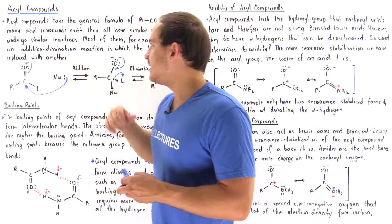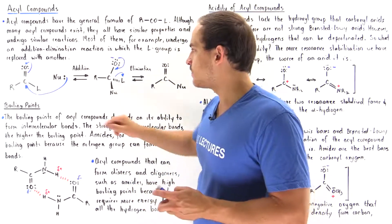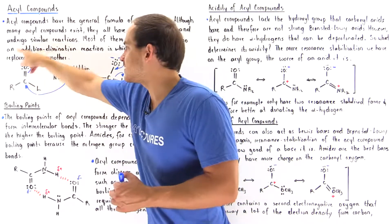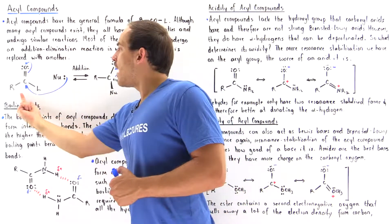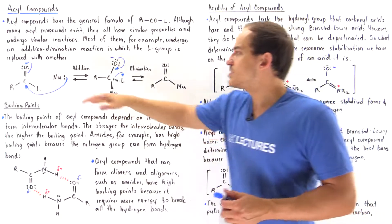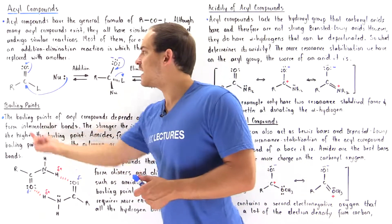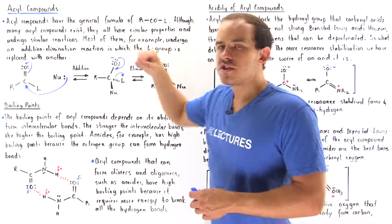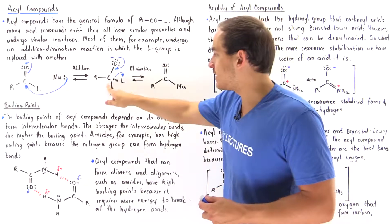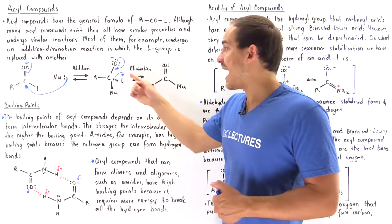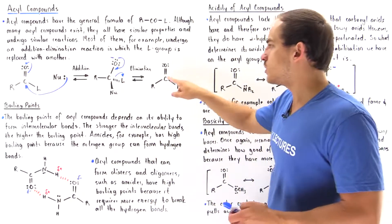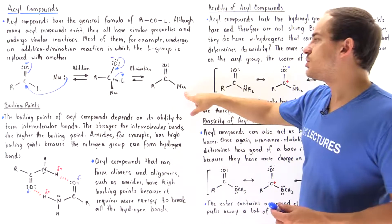Let's look at this addition-elimination reaction shown in the diagram. We have the acyl compound, and we add a nucleophile that acts as the base — the acyl compound acts as the Lewis acid. The two electrons bind to the carbon nucleophilically, displacing the pi bond and placing the two electrons onto the oxygen. This is the addition step. In step two, the pi bond is reformed, but instead of kicking off the nucleophile, we kick off the leaving group, forming a new acyl compound.